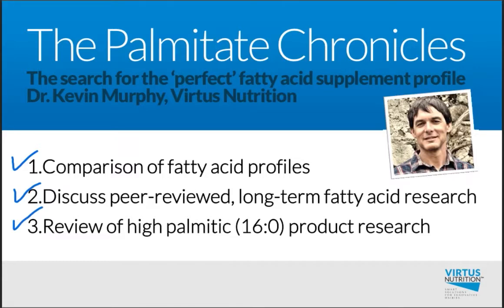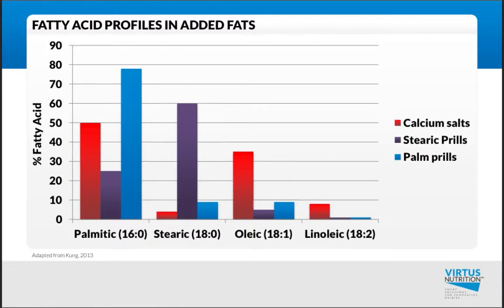Looking at this chart with fatty acid profiles and added fats, there are three different classes of bypass fatty acids: calcium salts, stearic prills, and palm prills, based upon different profiles of palmitic, stearic, oleic, and linoleic acid. The nomenclature we use are the carbon chains — 16 or 18 — followed by a colon and then the number of unsaturated double bonds. So palmitic and stearic are both saturated before they are fed.